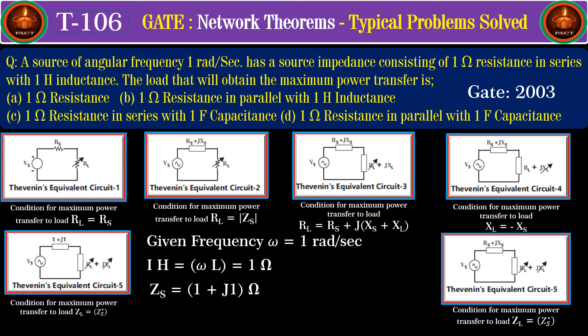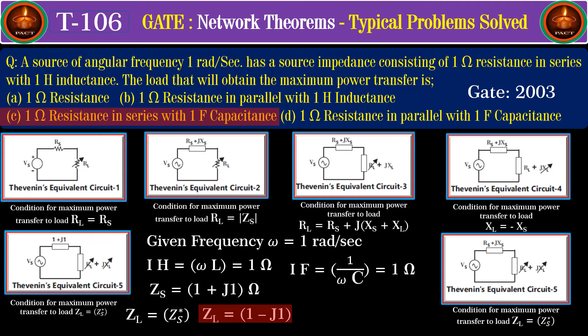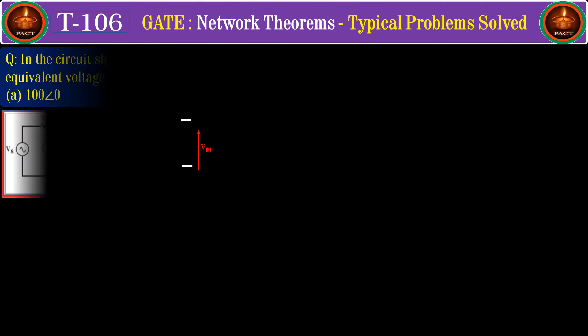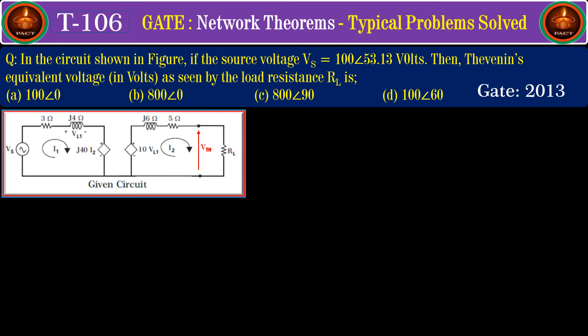The condition for maximum power transfer is ZL equals ZS conjugate. Since ZS equals 1 plus j1, then ZL should be 1 minus j1. This means one ohm resistance connected in series with one farad capacitance, and hence option C is the correct option.